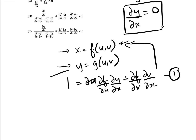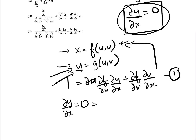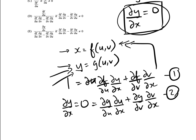Now the second one — this is where everybody gets confused. Because y equals g(u,v), and we've established that x and y are independent variables, so dy/dx partial equals zero. Therefore, when we differentiate the second equation with respect to x, we get: 0 equals ∂g/∂u · du/dx plus ∂g/∂v · dv/dx. That's equation 2, and this is the bit that everybody misses.